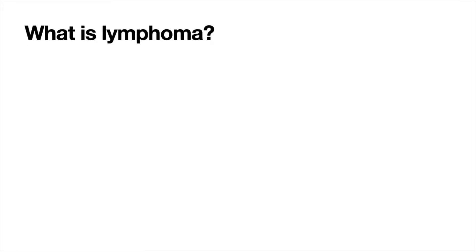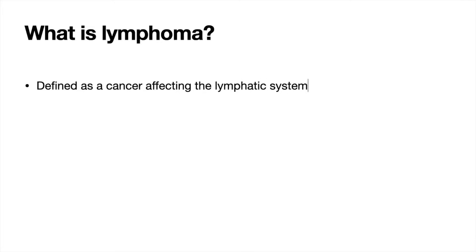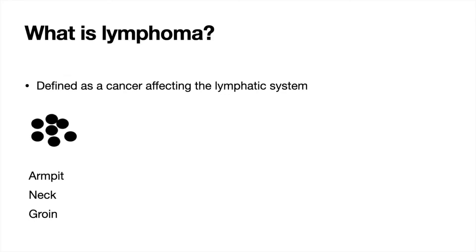To start off, let's think about what lymphoma actually is. In simple terms it's defined as a cancer affecting the lymphatic system. Primarily this affects the lymph nodes, and any lymph node in the body can be affected, however typically it affects the armpit, the neck and the groin — these are important areas to examine when approaching a patient. It's also important to remember that a number of other organs are affected in lymphoma and also play a part in the lymphatic system.